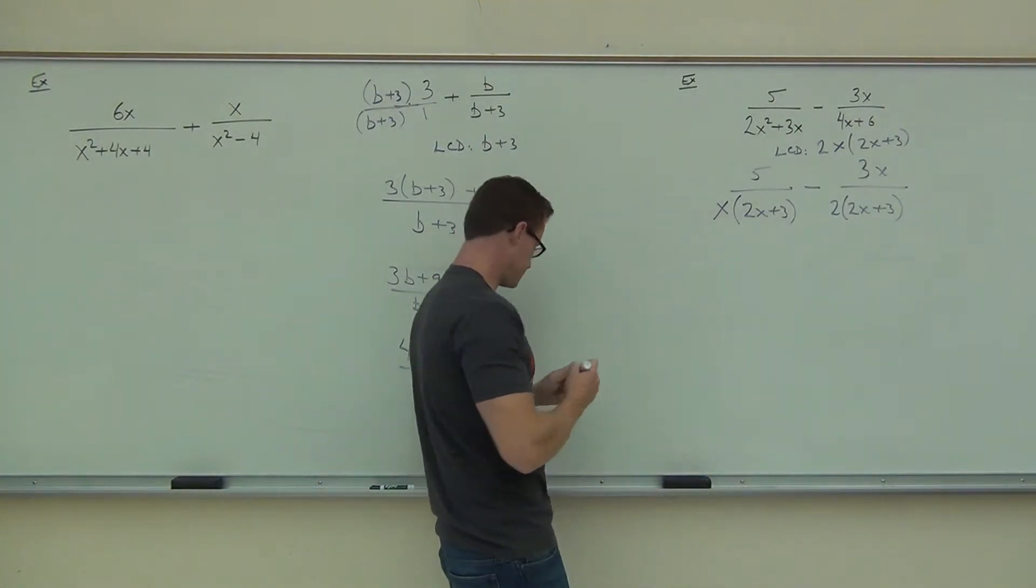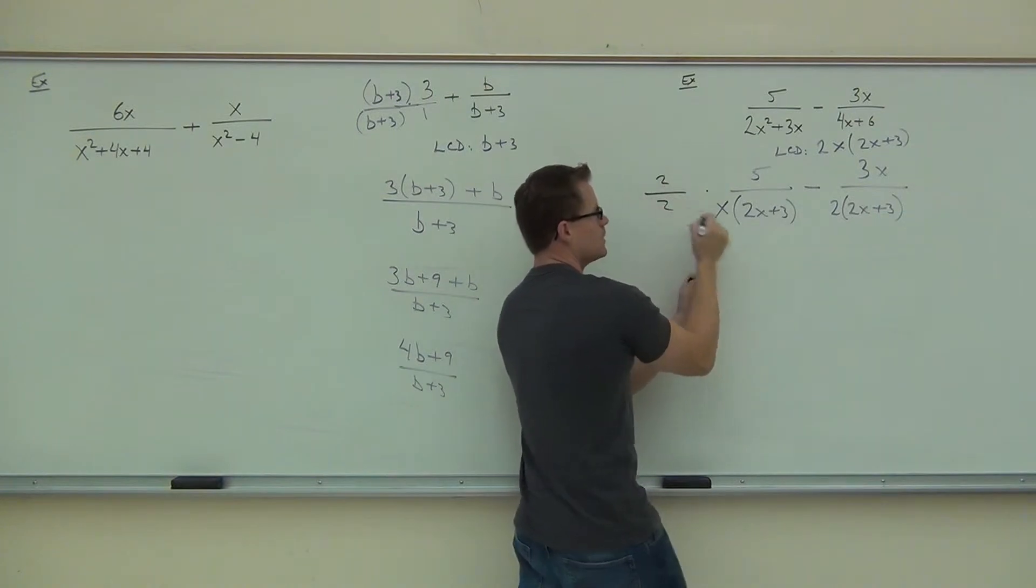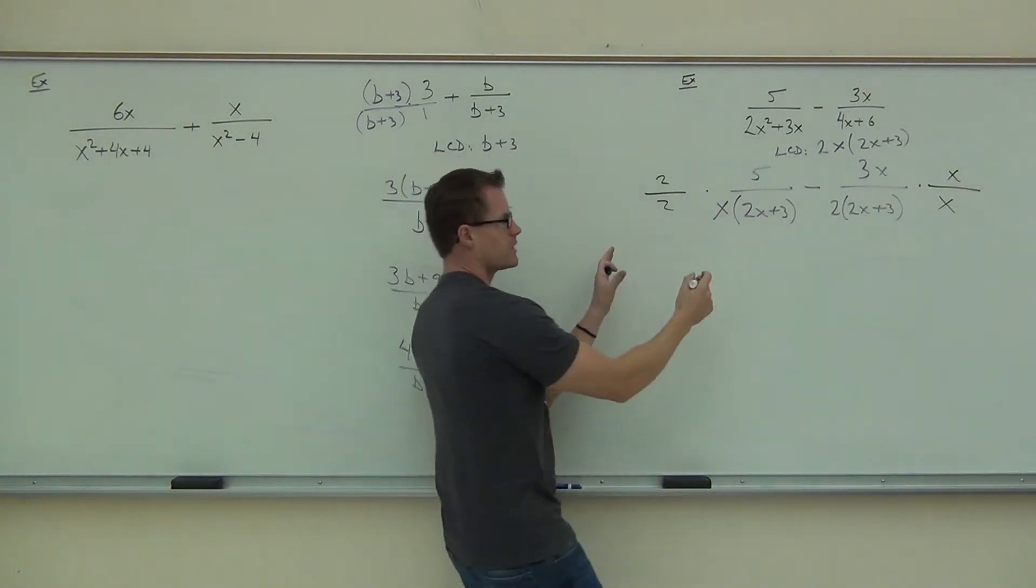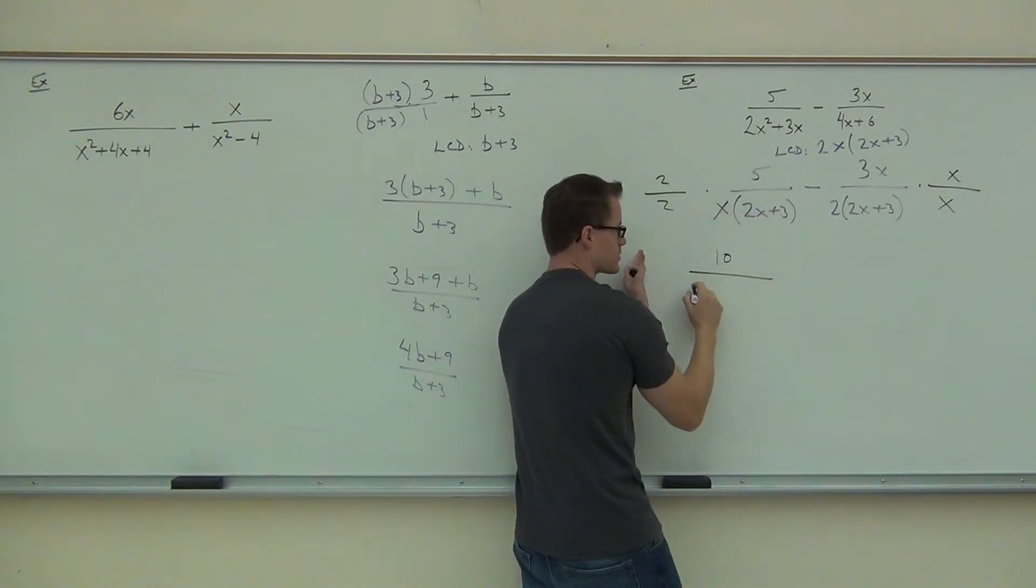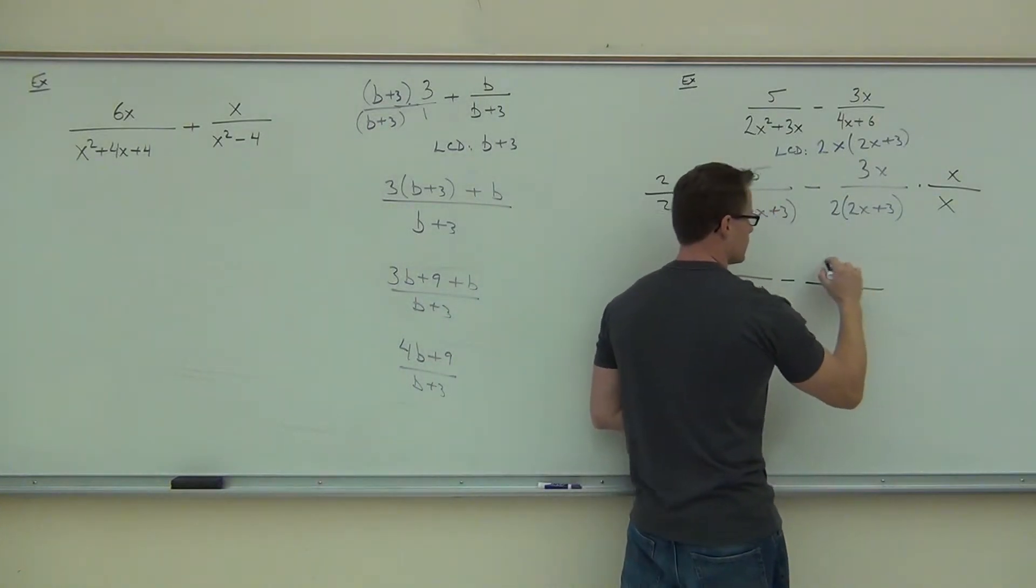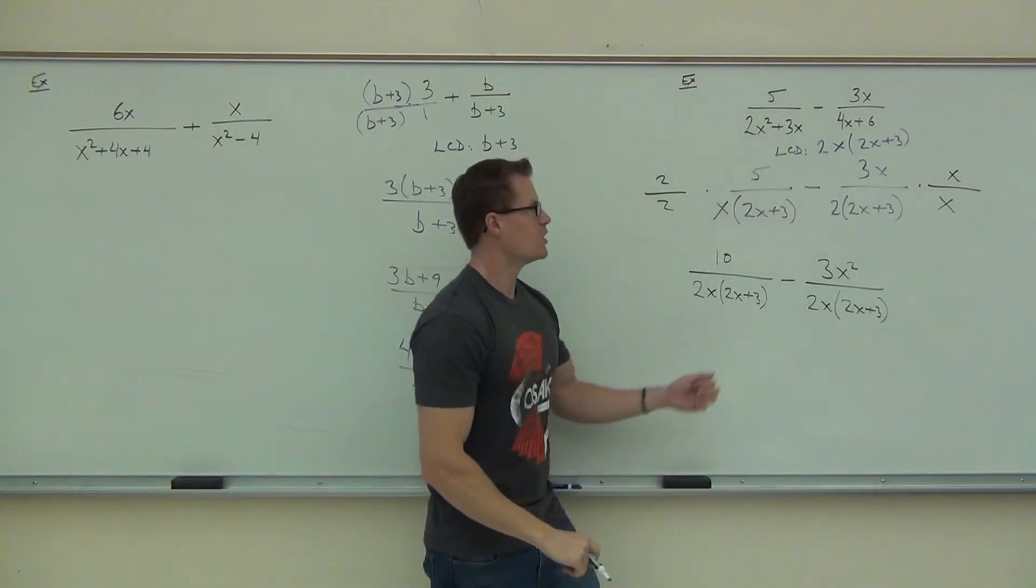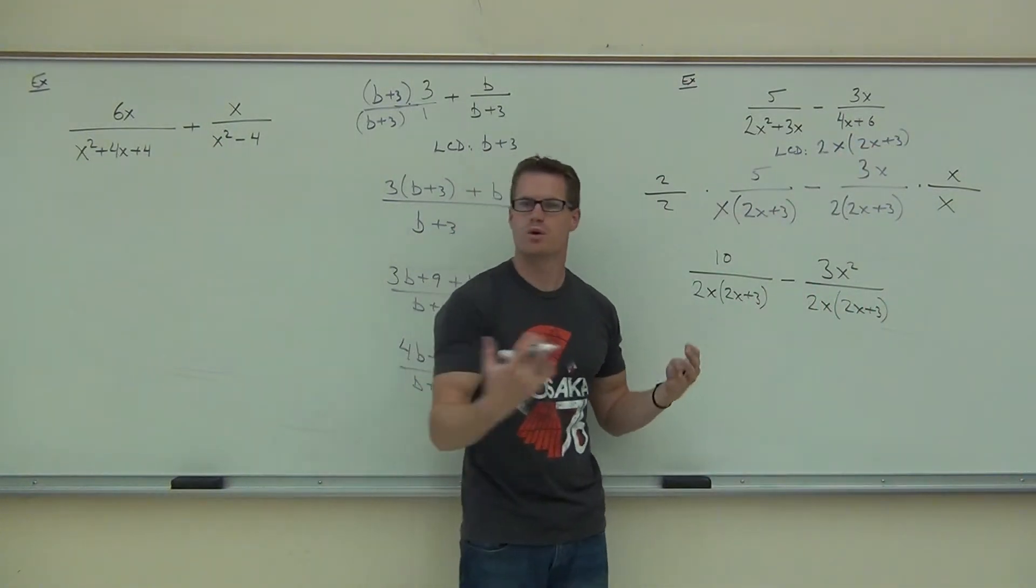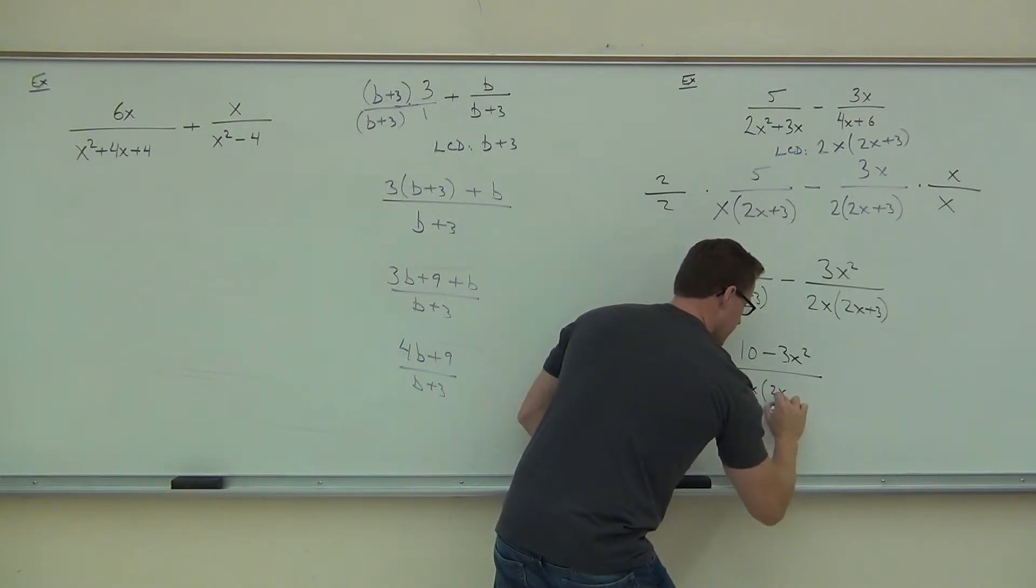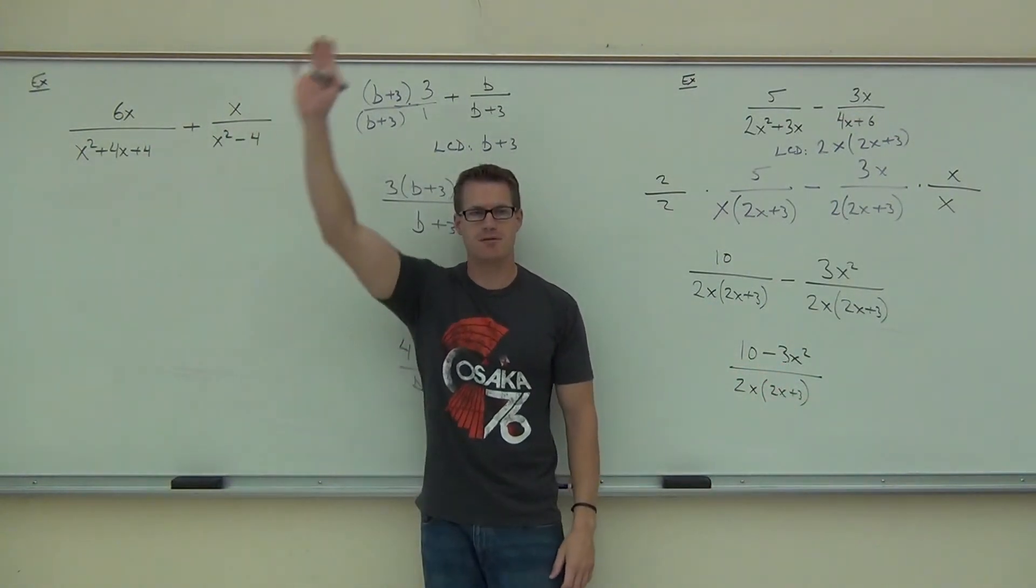Now we get to multiply by what's missing. On the left side, I notice I have an X and the 2X plus 3, but I'm missing the 2. On the right-hand side, I've got the 2. I've got the 2X plus 3. I'm missing the X. Now we multiply. We get our 10 over 2X times 2X plus 3. Never distribute that denominator. 3X squared like we had last time. And 2X plus 3 over there as well. We notice LCD occurs in all three spots. That's exactly what we want. We can make one fraction out of this thing. We'll get 10 minus 3X squared over our LCD. We would try to factor, but you can't factor that thing, so you're done. How many people made it that far? Good. That's fantastic.